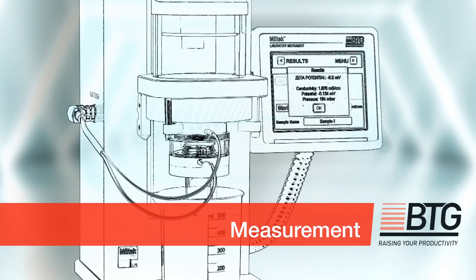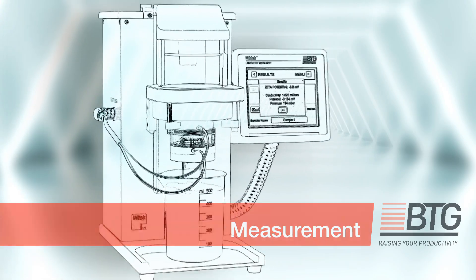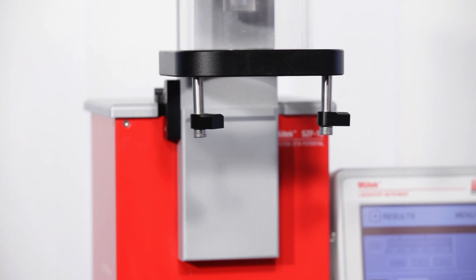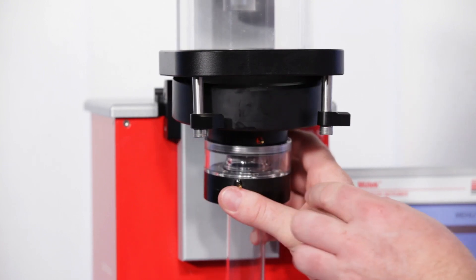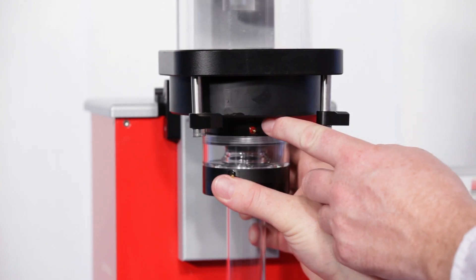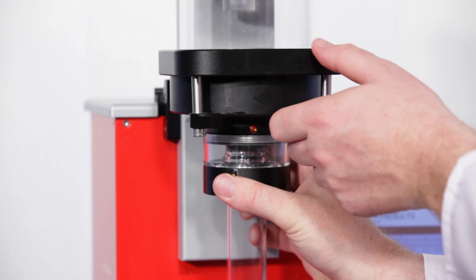Now, it's time to perform our first measurement. Attach the measuring cell to the overflow vessel. To this end, position the cell on the slot in the guiding bar, with the electrodes facing towards you.